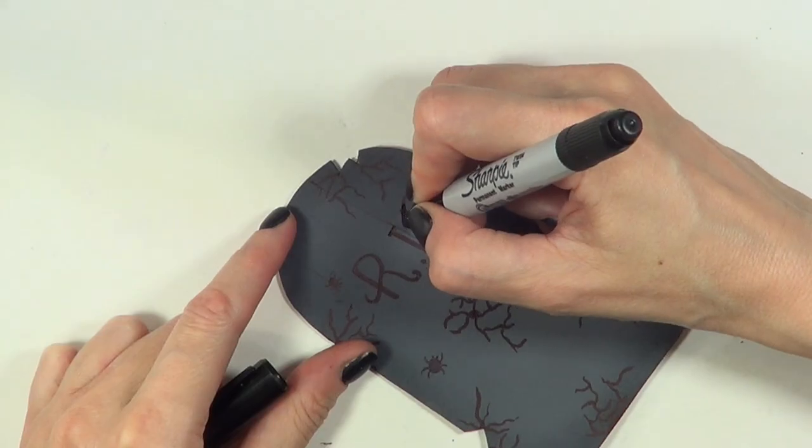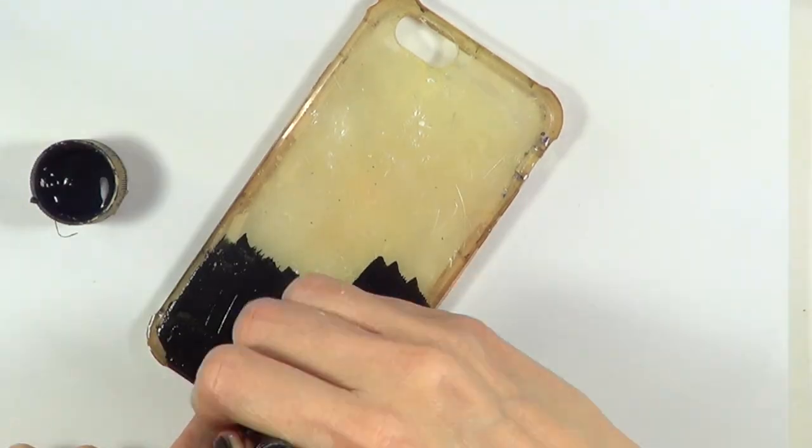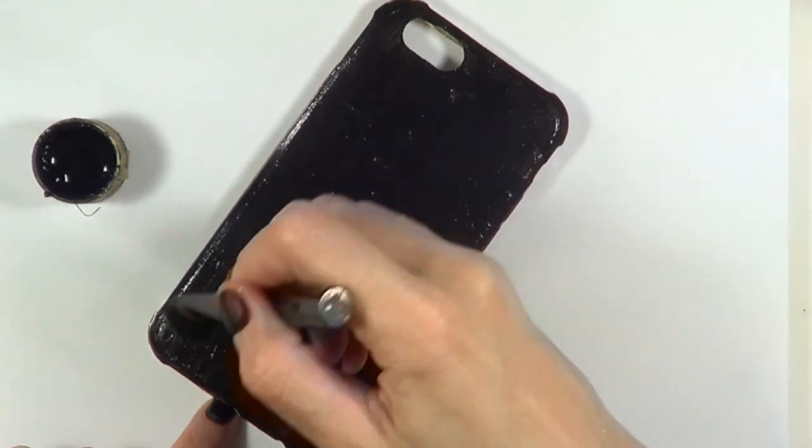Then as far as the phone case, I'm going to be using this old phone case. As you can see it's really stained, but I don't really mind because I end up painting this anyways using some black acrylic paint.